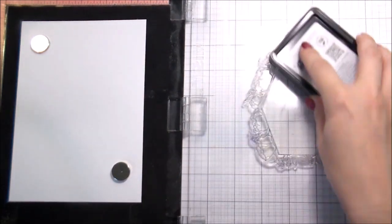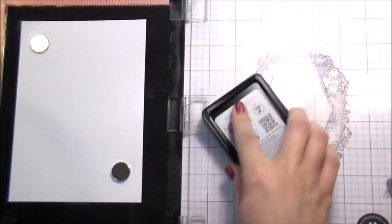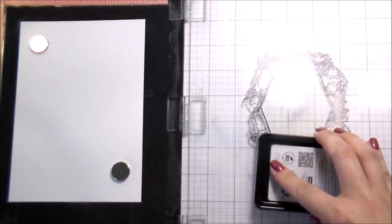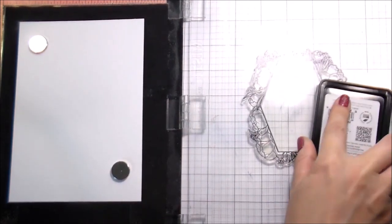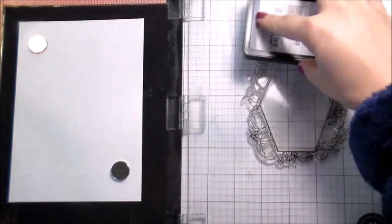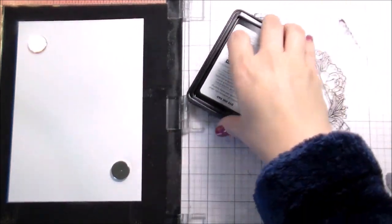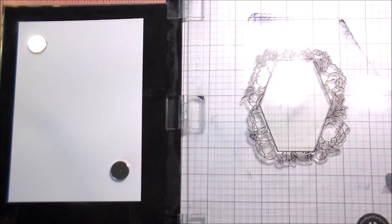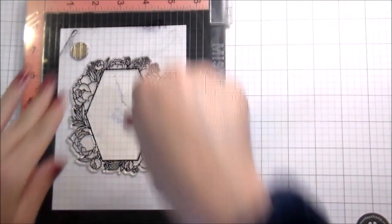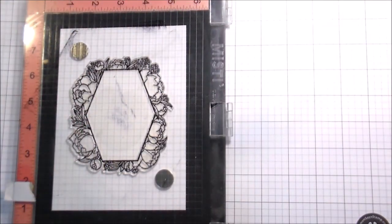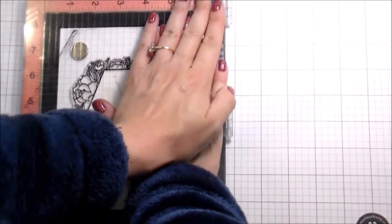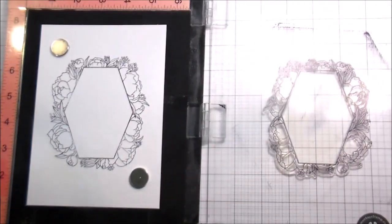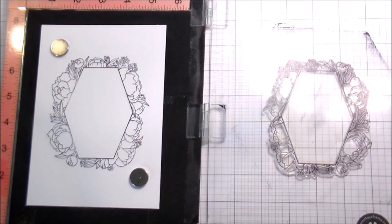So here I'm working on watercolor paper. This isn't my go-to. I kind of bought this just to try out. This is the Strathmore Ready Cut watercolor paper. It doesn't really say if it's hot or cold press, but it's already cut to 5x7 so it's super easy to just pull out and use and I seem to be getting fairly good results with it.